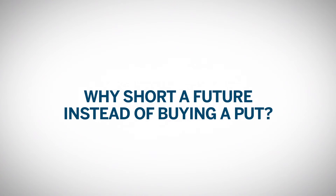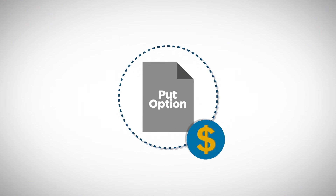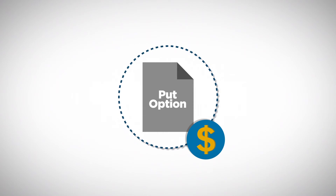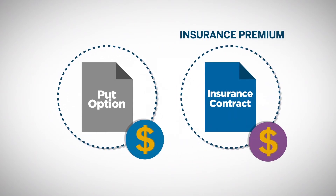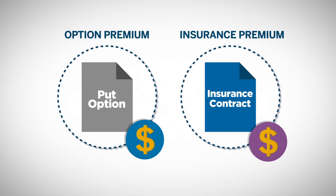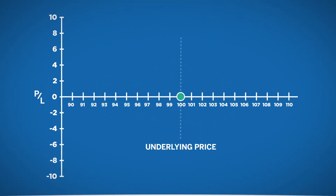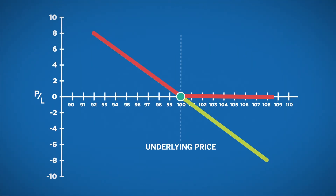Why would any trader short a future instead of buying a put? The potential to profit on a put option does not come without a cost. The seller or writer of the option will require compensation for the economic benefit given to the option owner. This payment is similar to an insurance policy premium and is called the option premium. The buyer of a put option pays a premium to the seller of a put option. As a result of the added cost of premium, the profit potential for a put is less than the profit potential of a future by the amount of premium paid.